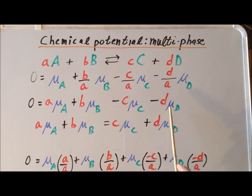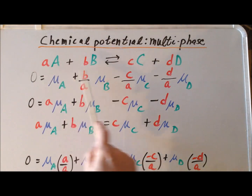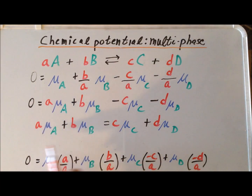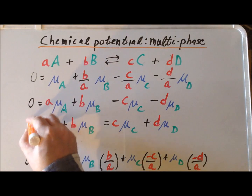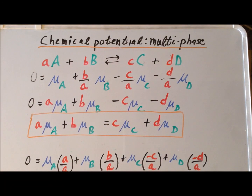Once we've reached this expression, all we have left to do is to add c times the chemical potential of C plus d times the chemical potential of D to each side, and we get the following expression. That for this particular generic multiphase reaction at equilibrium, a times the chemical potential of A plus b times the chemical potential of B — the reactant terms — is equal to c times the chemical potential of C plus d times the chemical potential of D, where C and D are the products. This gives us our expression for equilibrium in terms of the chemical potentials of each of the reactants and the products.